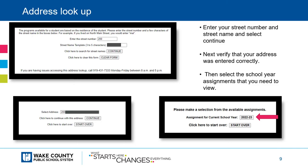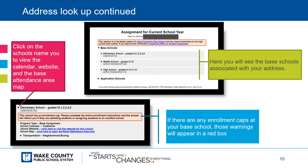Next, verify that your address was entered correctly. Finally, you will select the school year assignment that you need to view. Once you enter your address correctly, you will see the base schools associated with your address. Click on the school's name you would like to view, and the calendar, website, and the base attendance area map will appear.